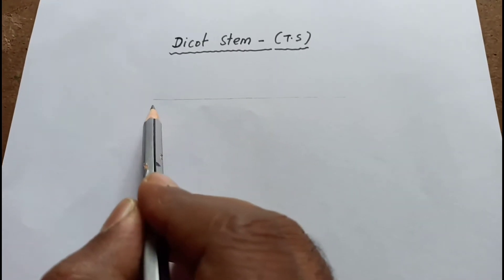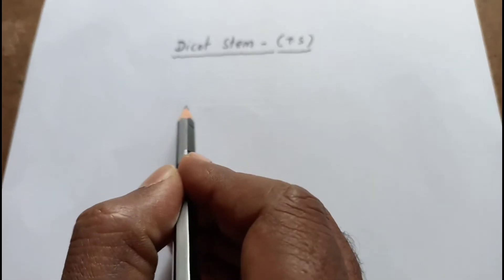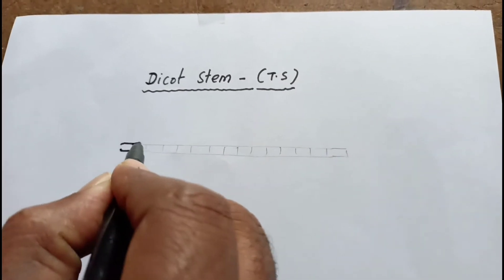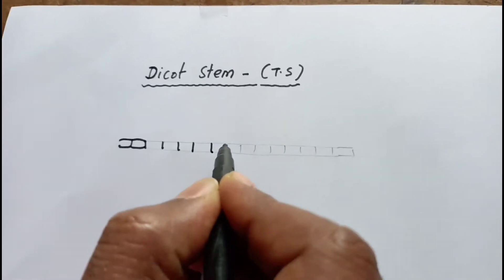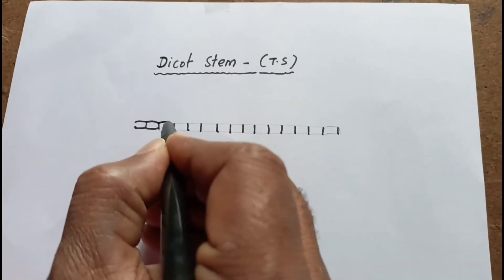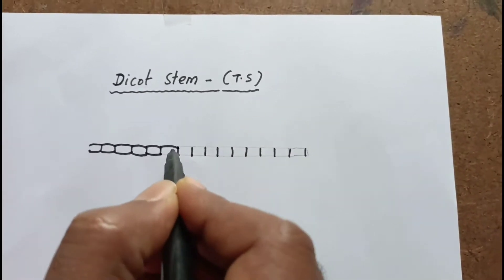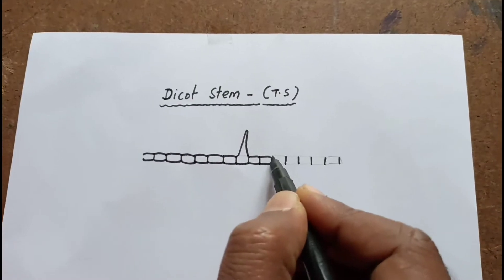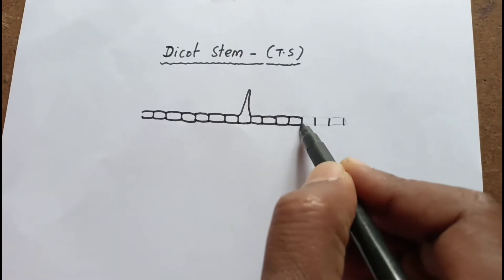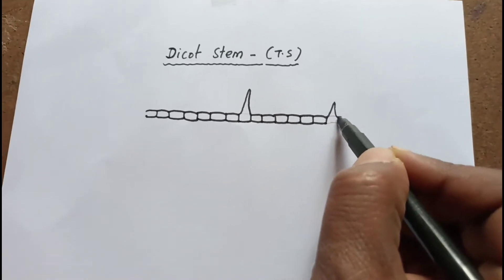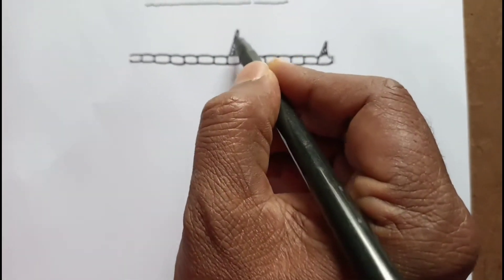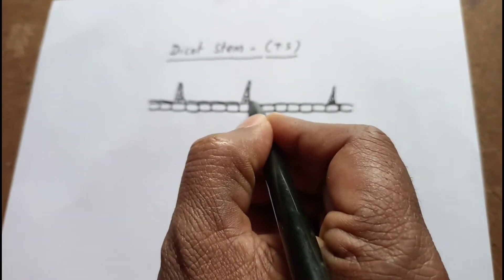First of all, let us start with the epidermis. You draw two lines like this. Generally, epidermis is a single-layered structure and the cells are in barrel shape. You have to draw it like this. This single-layered structure is known as epidermis, and the structure which protrudes from the epidermis is trichomes — these are multicellular hair-like structures.